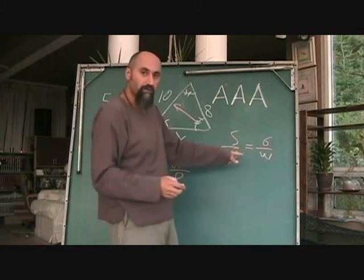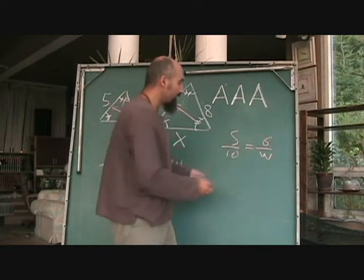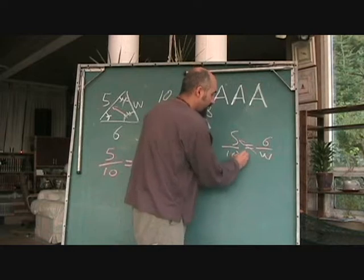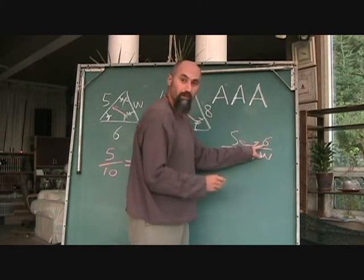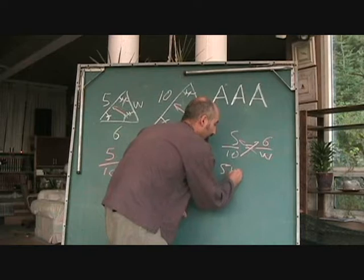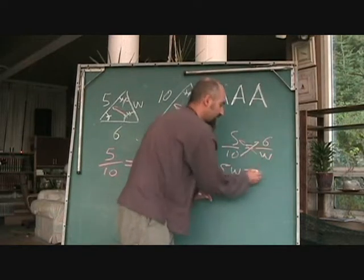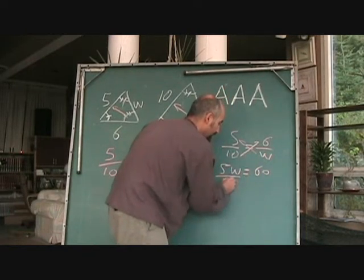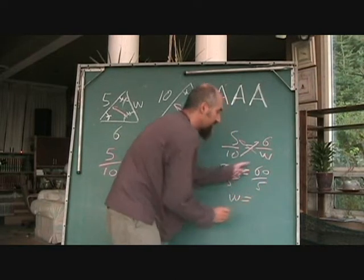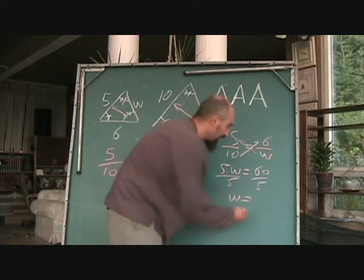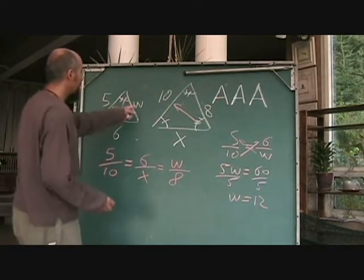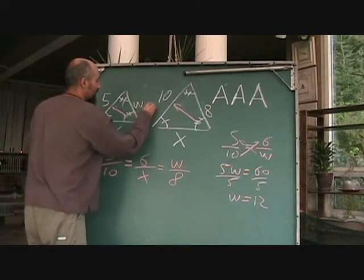To get rid of fractions, all you've got to do is cross multiply. The bottom from one side comes to the top on the other. So this becomes 5w is equal to 60, then divide by 5. So w is equal to 60 divided by 5, which is 12. You just solved for w, which is 12.